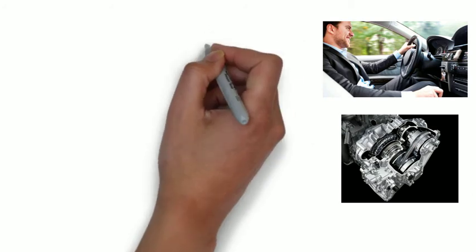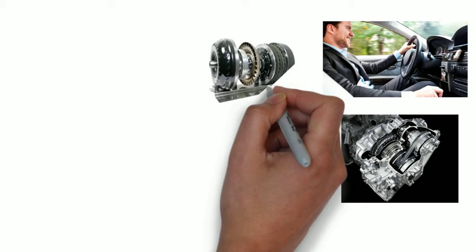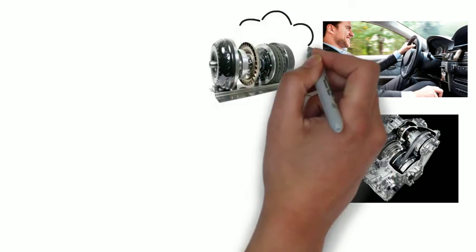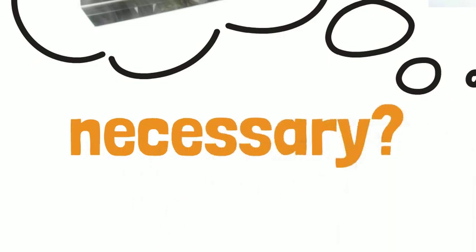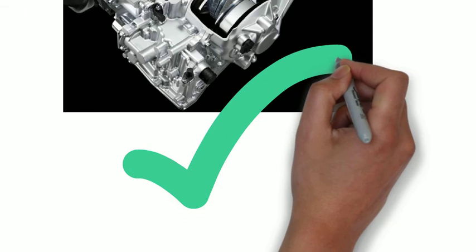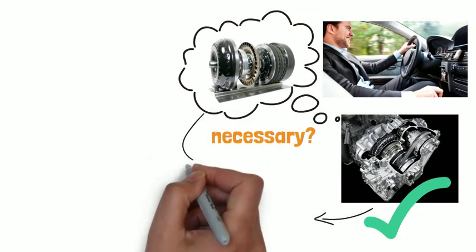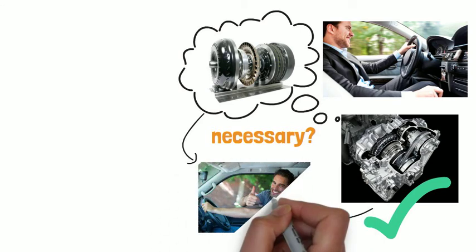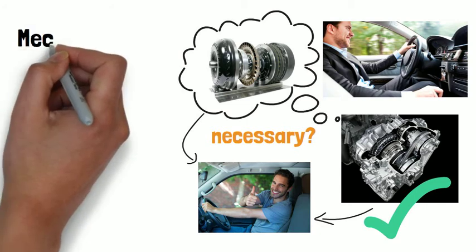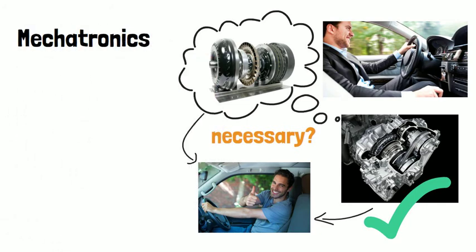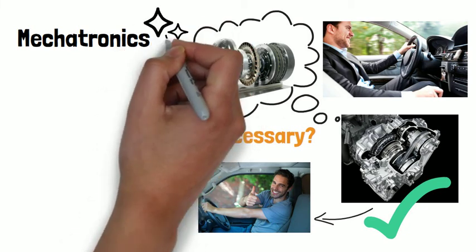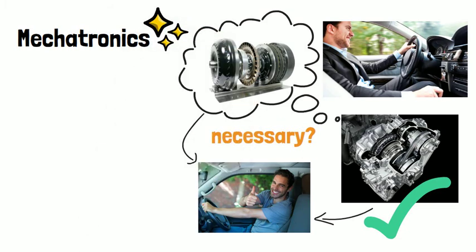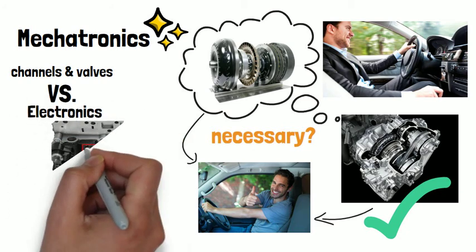Mercedes-Benz A-Class and B-Class, like the Mercedes-Benz Vito, VGS 722.8, are all equipped with a continuously variable transmission (CVT) with a torque converter. The torque converter is not strictly necessary as the CVT function is good and comfortable enough, but the combination of CVT and torque converter brings high satisfaction to Mercedes owners. The mechatronics component combines mechanics and electronics to coordinate the function between CVT and torque converter, with channels and valves as the mechanical part and the TCU as the electronics component.